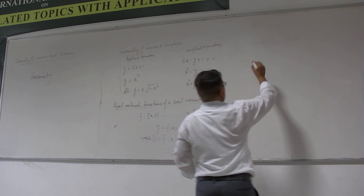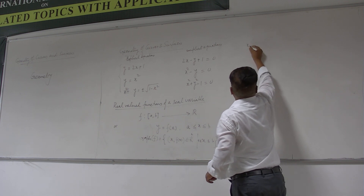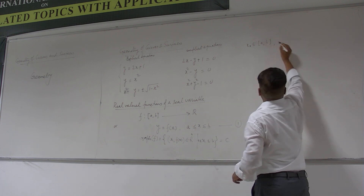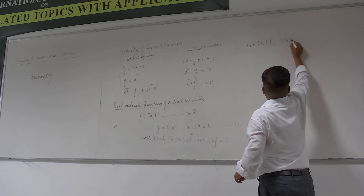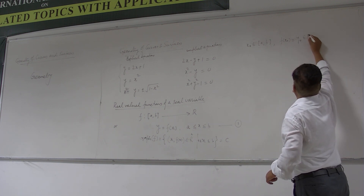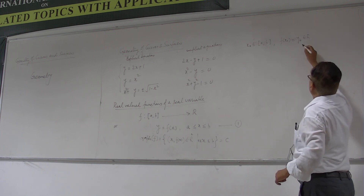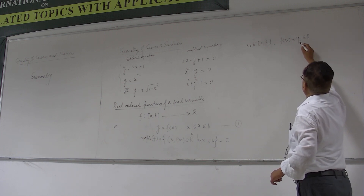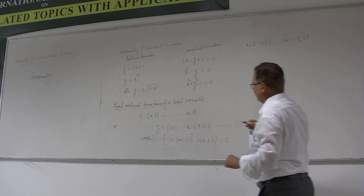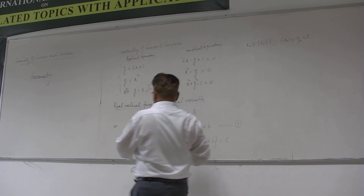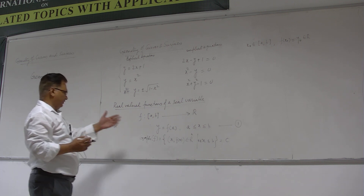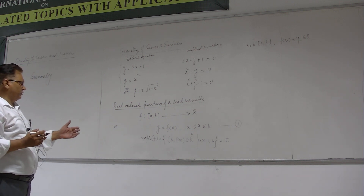If I consider a point x₀ in the interval [a, b], its image f(x₀), which you may call y₀, is a real number. This value y₀ is called the value of the function at the point x₀. That is the reason we say that f is a real-valued function on an interval [a, b], or a real-valued function of a real variable.